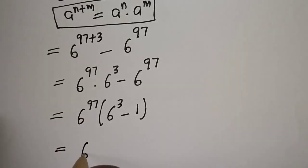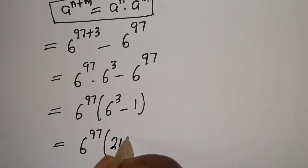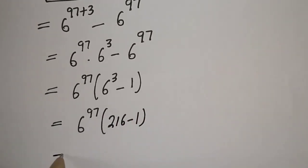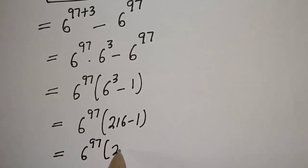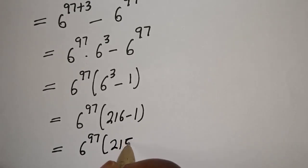Then 6 raised to power 97 bracket, 6 raised to power 3 is 216 minus 1. 6 raised to power 97 bracket 216 minus 1, that is 215.